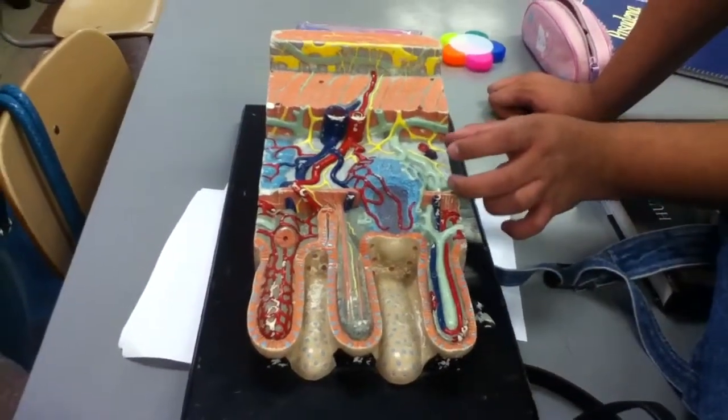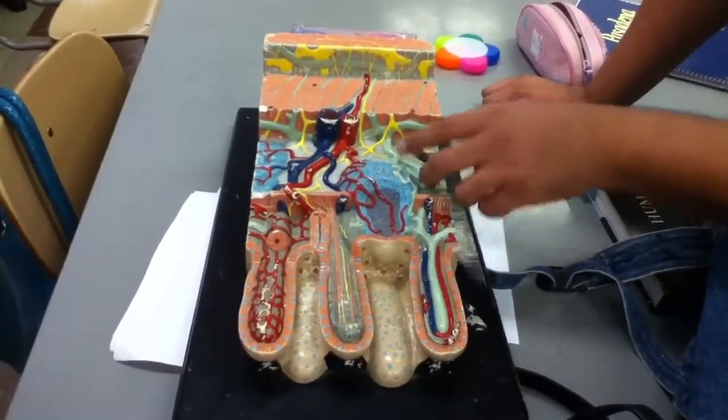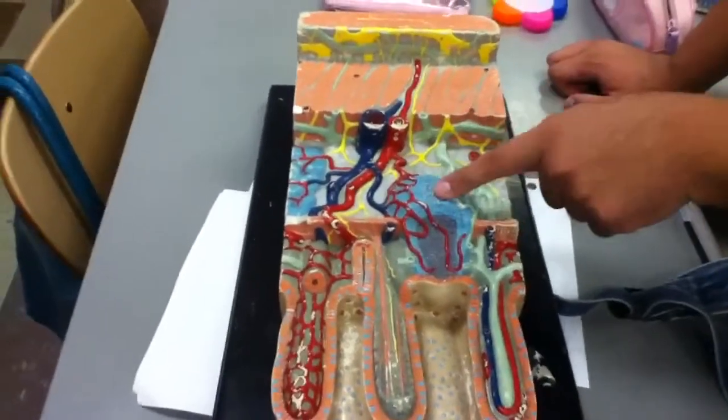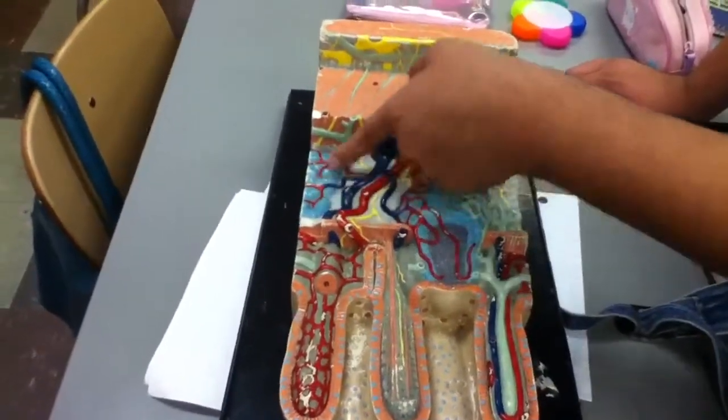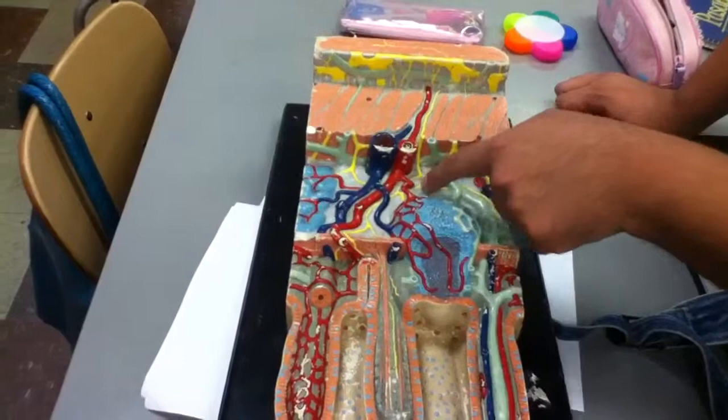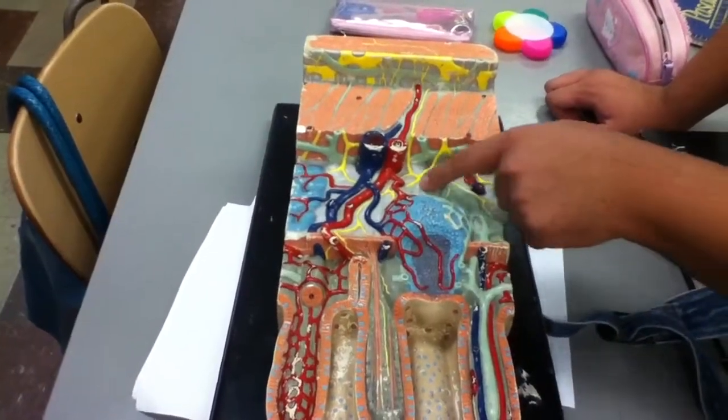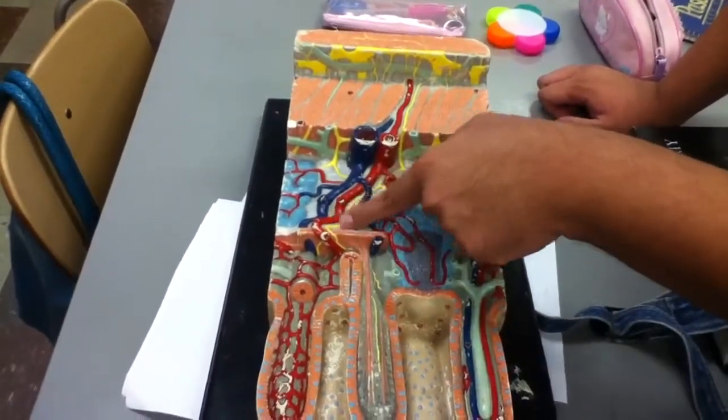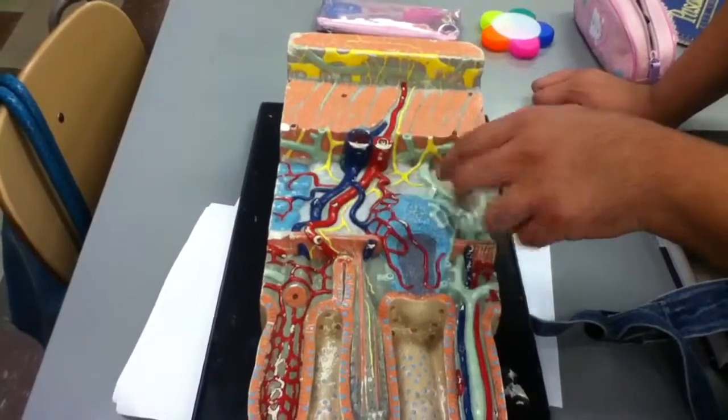All this is submucosa. In the submucosa, besides the lymphatic nodule, we're also going to have Brunner's glands and this yellow nerve plexus. This is the submucosal nerve plexus or Meissner's nerve plexus. They're both the same.